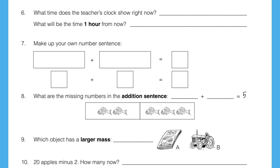Question 9. Which object has a larger mass — object A or object B? I think we can see one of those is a newspaper and one is a tractor. Which object has a larger mass?